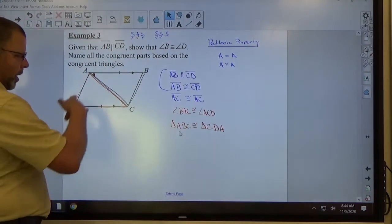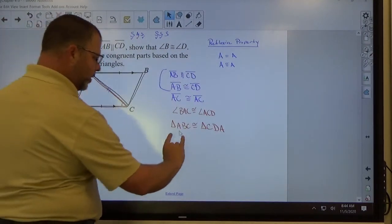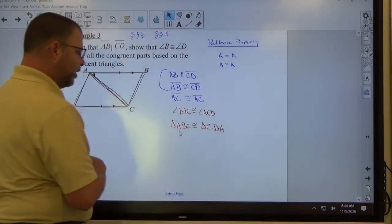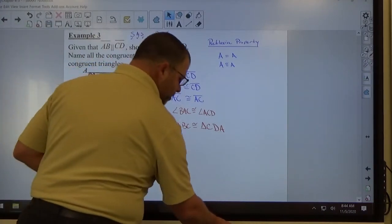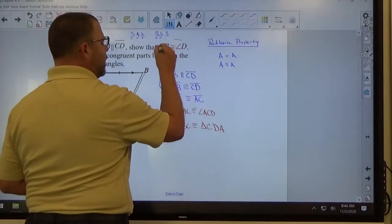Notice AC matches AC. So everything's good about that name. And then finally, once we have that set up, we're supposed to show that B is congruent to D.